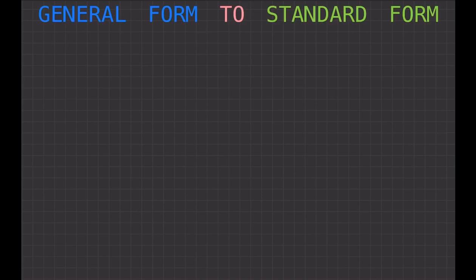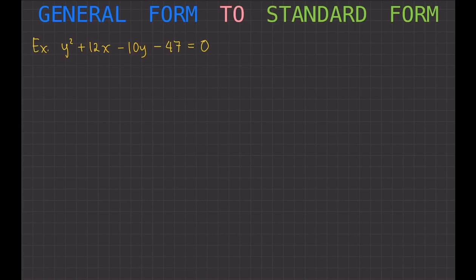Let's say you are given an equation of this form: y squared plus 12x minus 10y minus 47 equals zero. The first thing we are going to do is rearrange the terms.